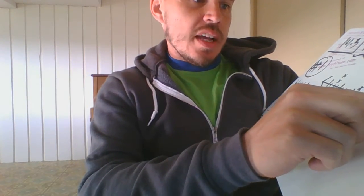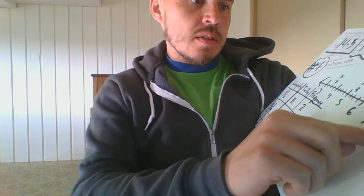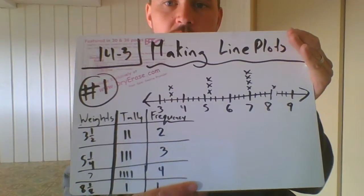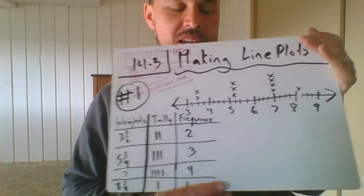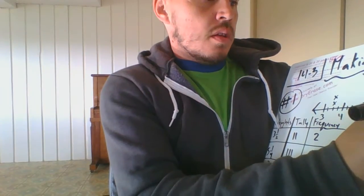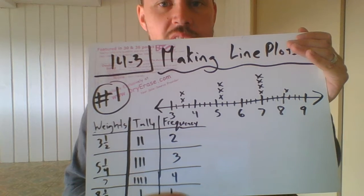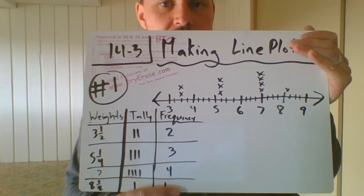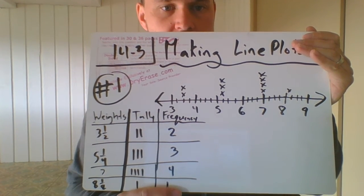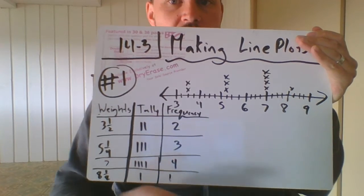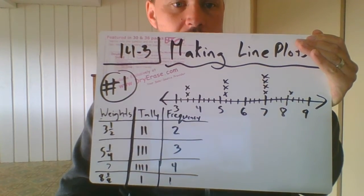So when you look at the answer key that I sent your parents, you'll notice you just put an X between eight and the whole number. That's going to be where eight and an eighth is going to be. So the key is you're going to need to put these line plots in the right spot in the correct order. So as I did that right there, you'll see how I put those X's on the line plot.